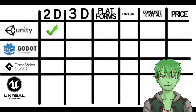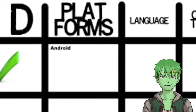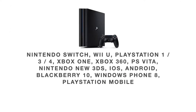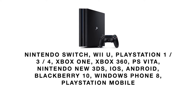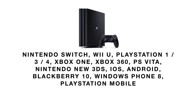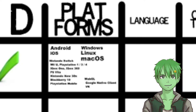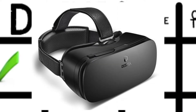So Unity supports both 2D and 3D, and it also supports a lot of platforms such as Android, iOS, Windows, Linux, MacOS, and a lot of console targets. So if you make a game in Unity, you can export your game to all of these platforms, and you can also export it to WebGL or VR if you want to make a VR game.